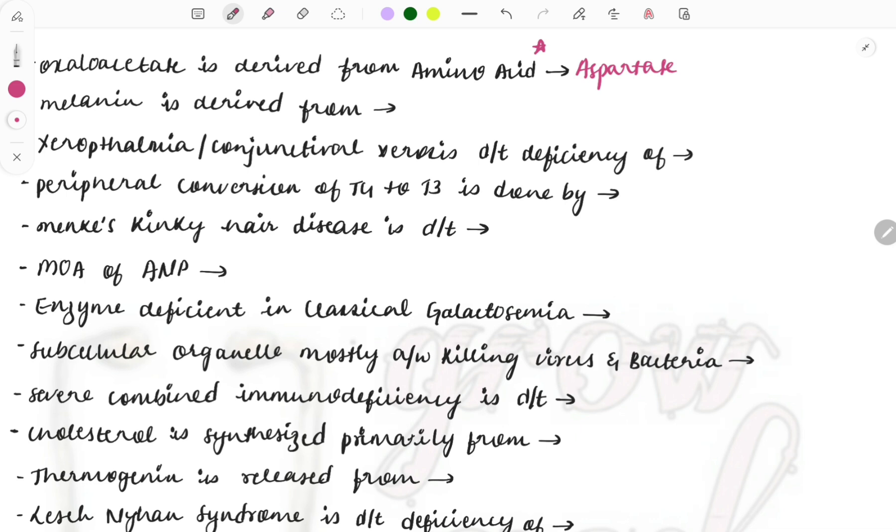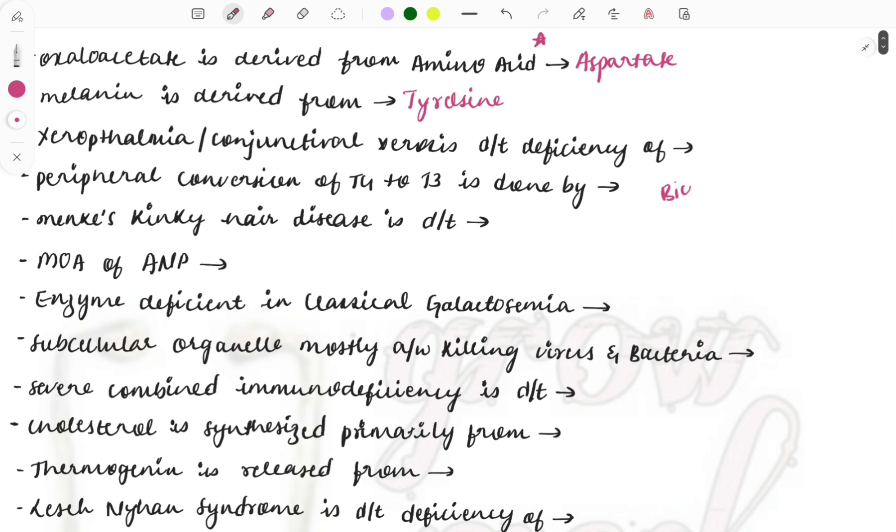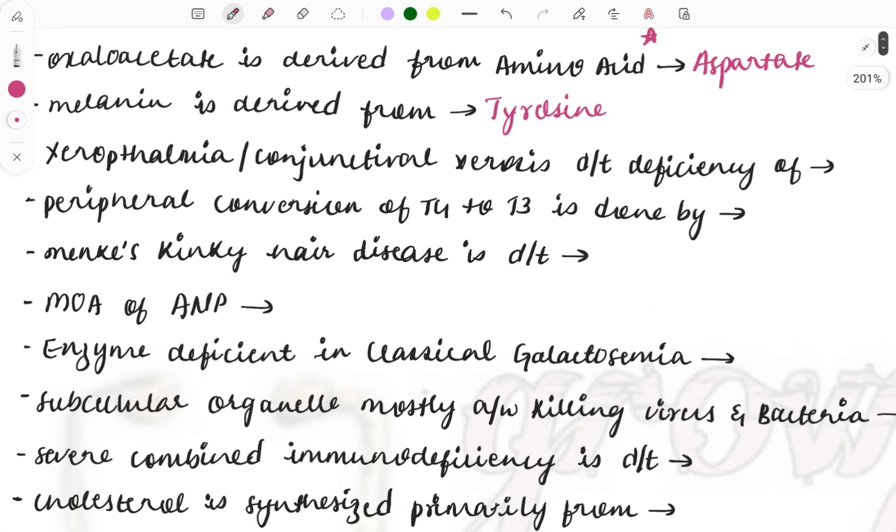Melanin is derived from which amino acid? It is tyrosine. Amino acids and their derivatives are a must, must, must do topic. Let me also say that I have uploaded biochemistry revision videos on my YouTube channel - approximately 20 to 30 minute videos in which all the important things you must know have been discussed. Do watch those videos also to master the biochemistry.